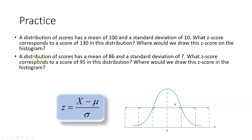Here's the second exercise. A distribution of scores has a mean of 86 and a standard deviation of 7. What z-score corresponds to a score of 95? Go ahead and pause your video. Hopefully you discovered that 95 minus 86 over 7 gives about 1.29. A z-score of 1.29 would fall somewhere between a quarter and a third above the one standard deviation mark — about 1.29 standard deviations above the mean.